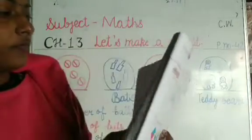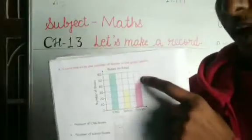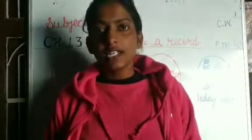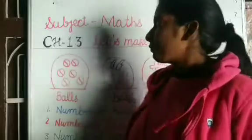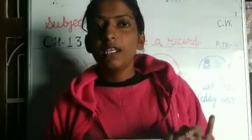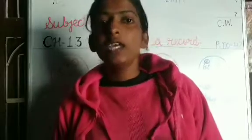This is a bar graph on a grid. You have to look at the grid and answer the questions. The green bar stands for CNG buses, the yellow bar stands for school buses, and the pink bar stands for private buses. Answer: number of CNG buses, number of school buses, and number of private buses. The numbers are read from the bar graph. Do this worksheet independently, and if you have any confusion, ask me in the online class.